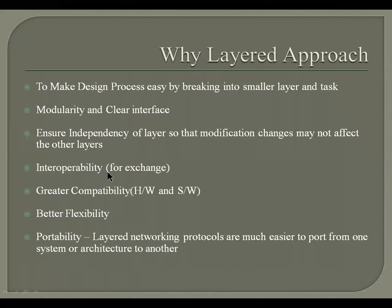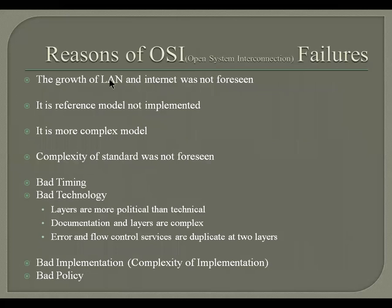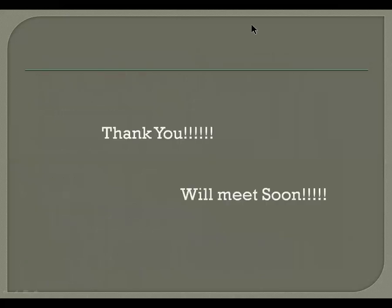Finally, we'll discuss the reasons for the OSI model's failure. The growth of LANs and the internet was not foreseen by OSI developers. OSI is a reference model — not implemented — whereas TCP/IP has been implemented. OSI is more complex. There was bad timing during development; TCP/IP came up with a working implementation model. The layers were considered more political than technical, documentation was complex, error flow and flow control services were duplicated across the data link layer and transport layer, and there were bad implementation and policy decisions. These are the reasons OSI failed. Thank you for watching this video.